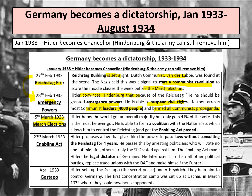Next we need to think about the March elections. Hitler was hoping to get an overall majority - more than 50% - which would allow him to control the Reichstag. In July 1932 the Nazis had 37% of the vote or 230 seats. In this election he gained more but only got 44% of the vote, not enough to control the Reichstag on his own. So he did a deal and formed a coalition with the Nationalist Party, the DNVP, giving them more than 50% of Reichstag politicians. This was crucial because it then allowed Hitler to pass the Enabling Act.